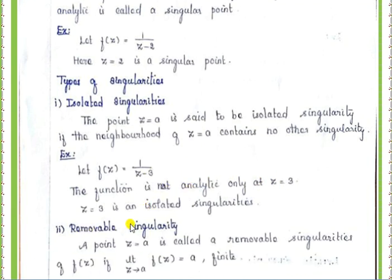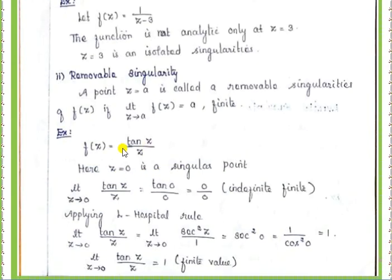The next type is removable singularity. A point z equal to a is called a removable singularity of f of z if limit z tends to a of f of z is finite. For the function f of z equal to tan z by z, directly substituting z equal to 0 gives an indeterminate form 0 by 0. After doing some process we get a finite value, so that particular point is called a removable singularity.